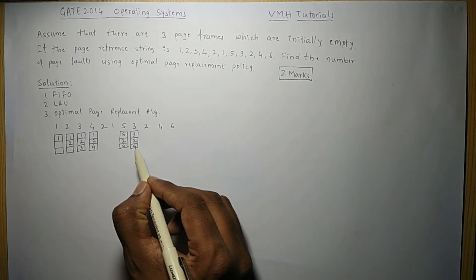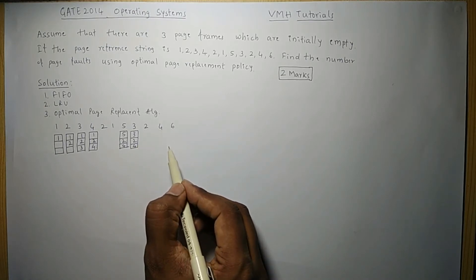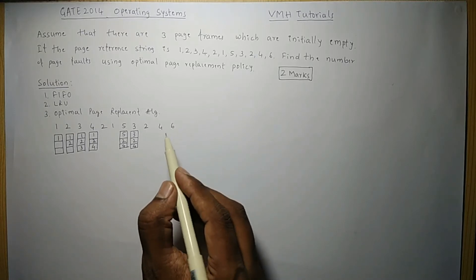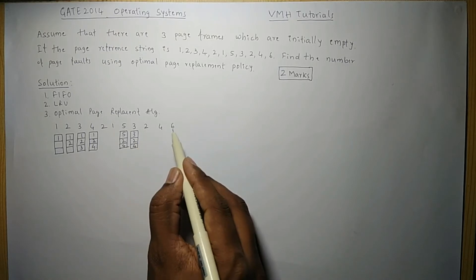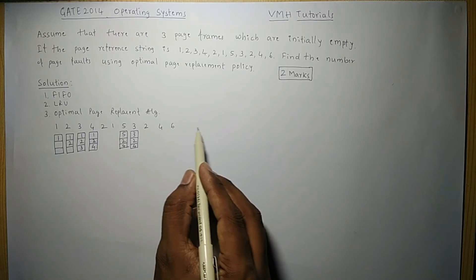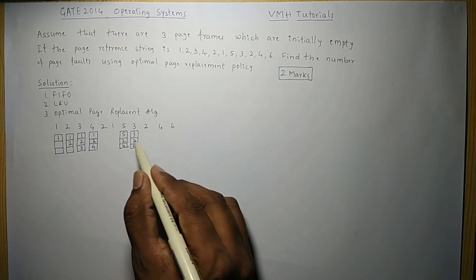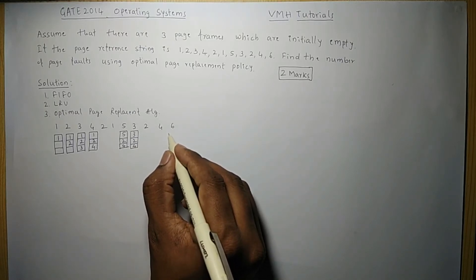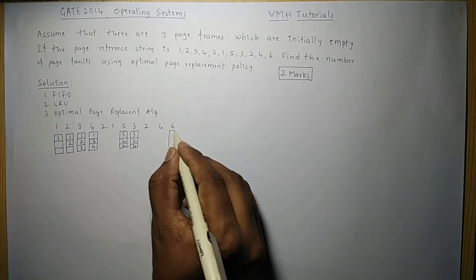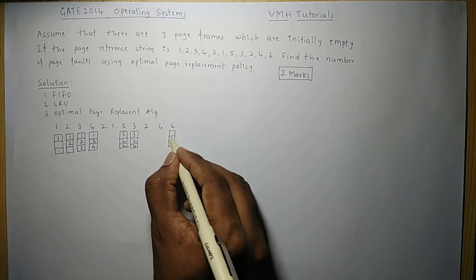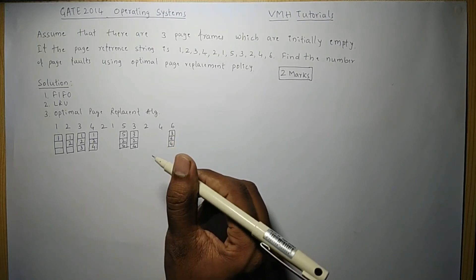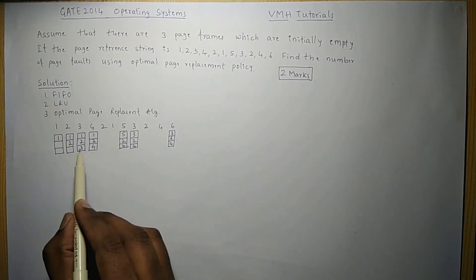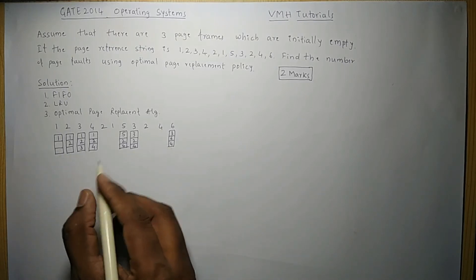The next reference is for page 4, which is already available — no page fault. The next reference is for page 6, which is not in memory, so there is a page fault. Since there are no further references after this, we can replace any existing page. We replace page 2 with page 6. The final memory state is pages 3, 6, and 4. Counting total page faults: 1, 2, 3, 4, 5, 6, 7 — we get seven page faults.